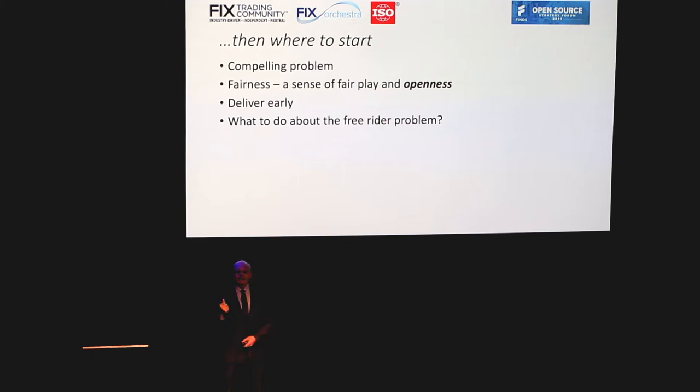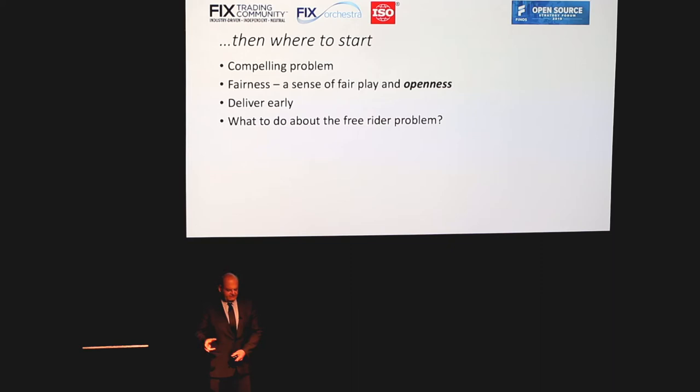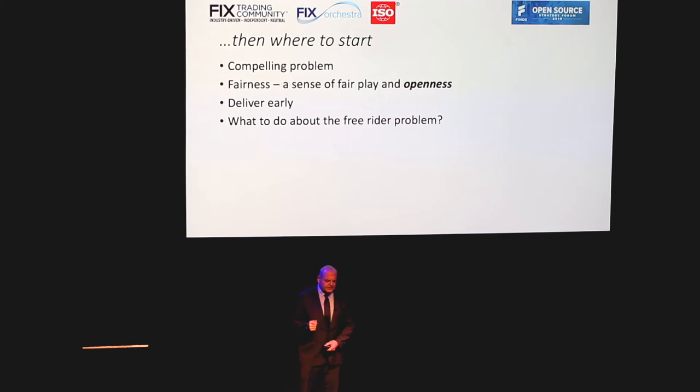So where do we start with this community? Some of the themes you take away from the Social Architecture book are: first, start with a compelling problem. Start with a problem that people will want to work on even if they're not paid. If you don't have a compelling problem or something that needs to be solved, then you might as well stop.